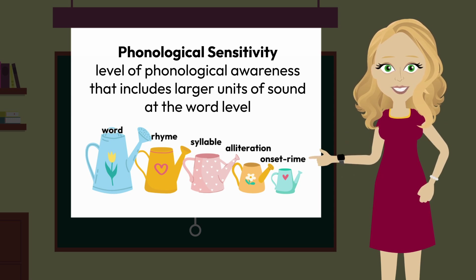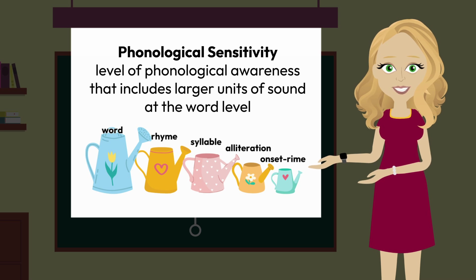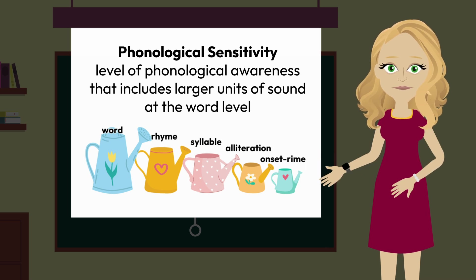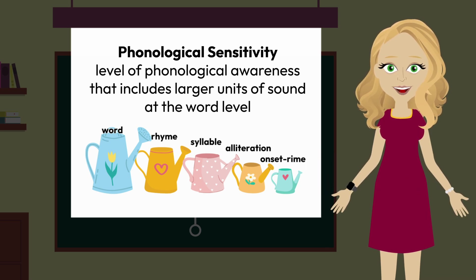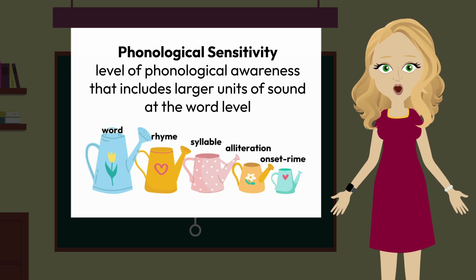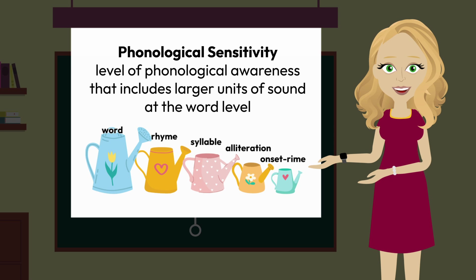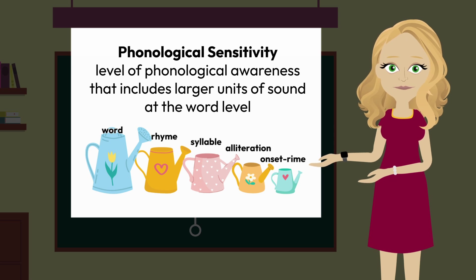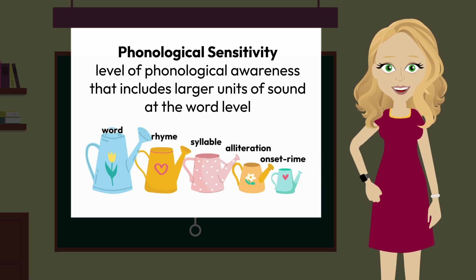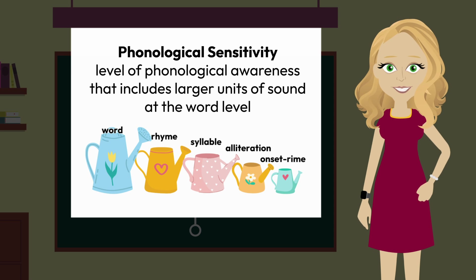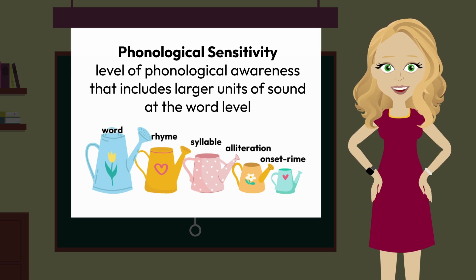Phonological sensitivity develops in stages based on a linguistic hierarchy of sounds that progresses from larger to smaller units of sound. These stages are identified as levels, and each level involves working with the targeted sound units at various degrees of skill complexity. There are five levels of phonological sensitivity. Word awareness is an understanding that sentences and/or phrases are made up of individual words, and that words begin and end within the flow of speech — that we are able to hear how sounds chunk together to form words.